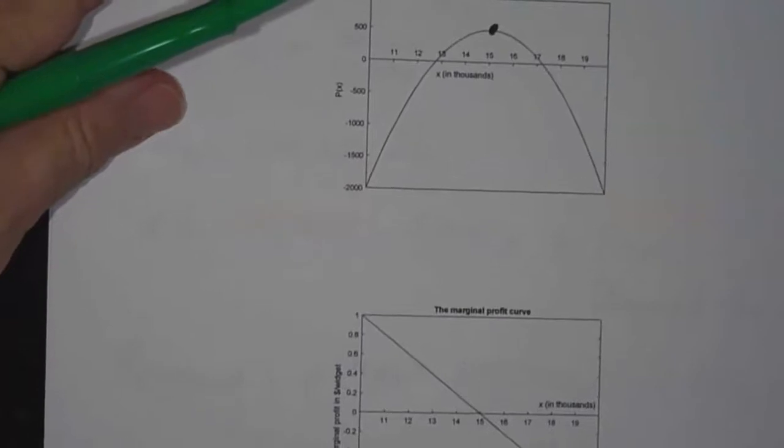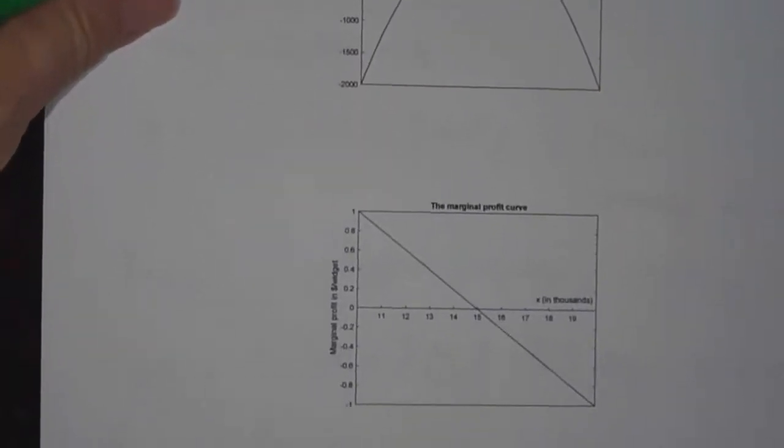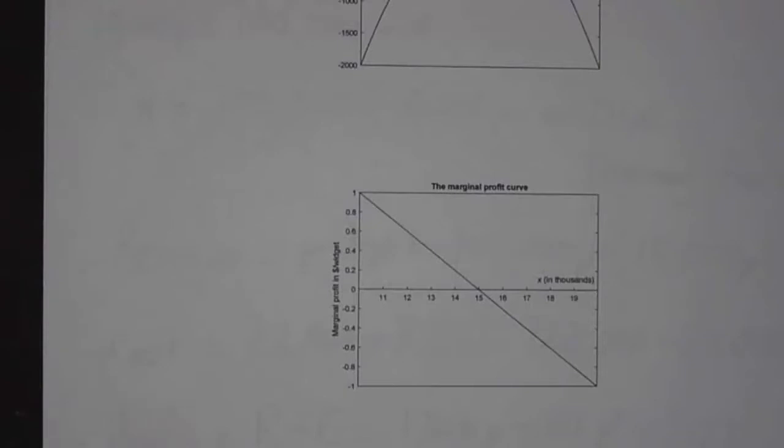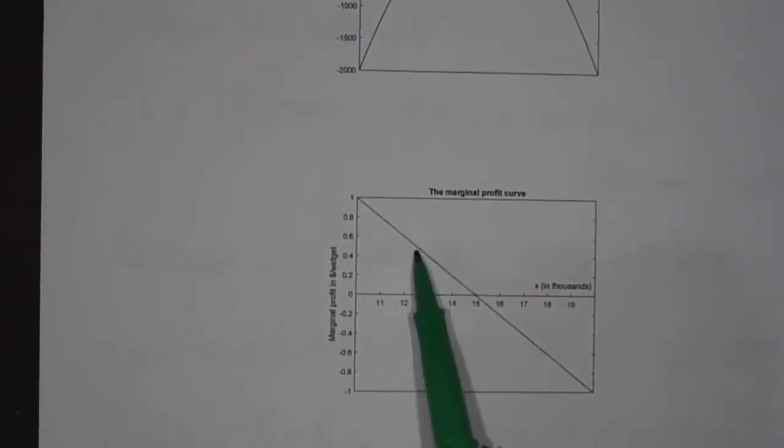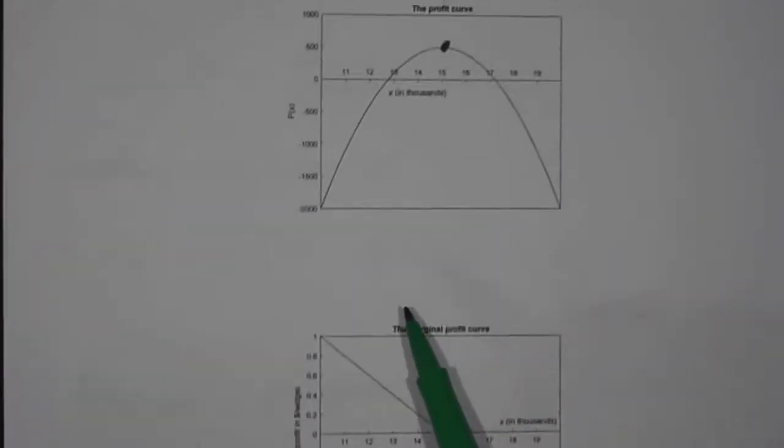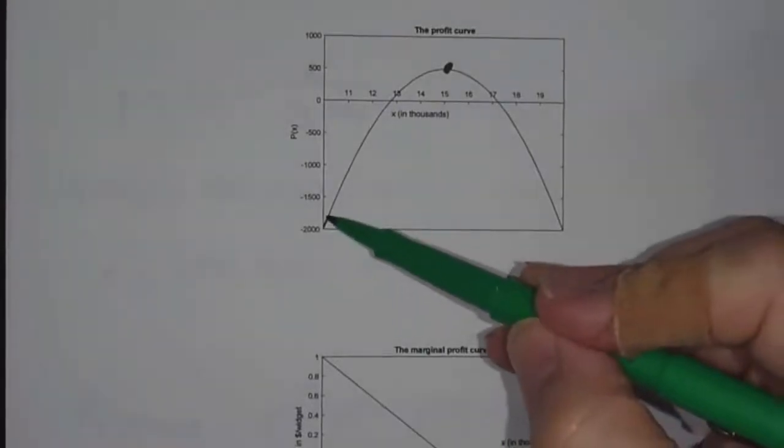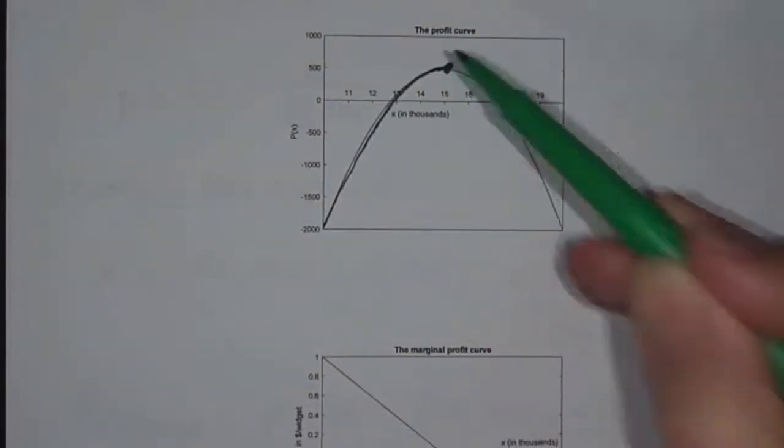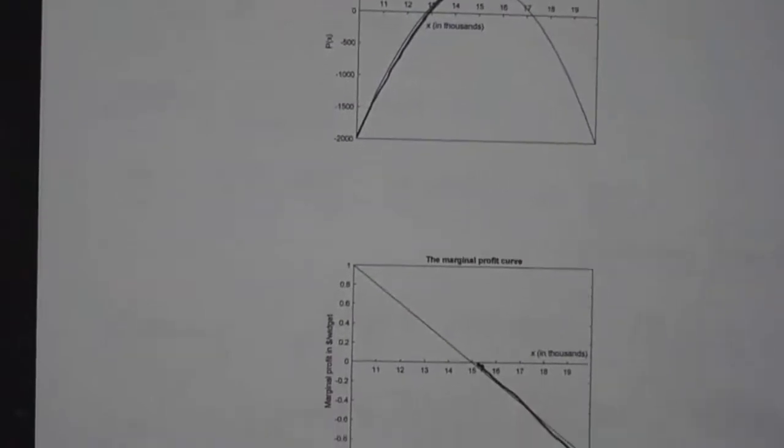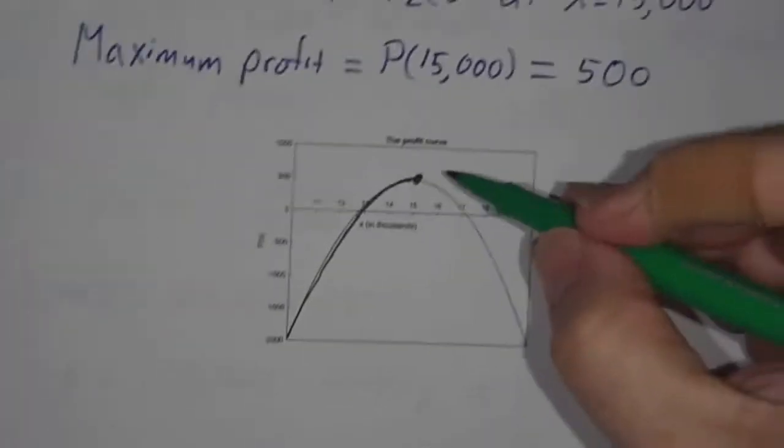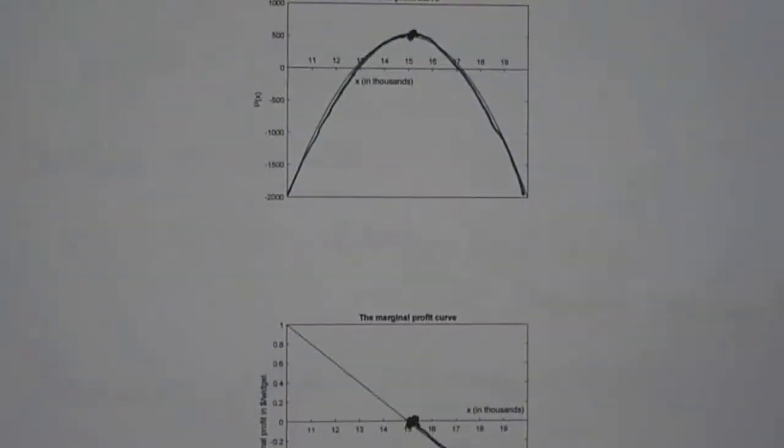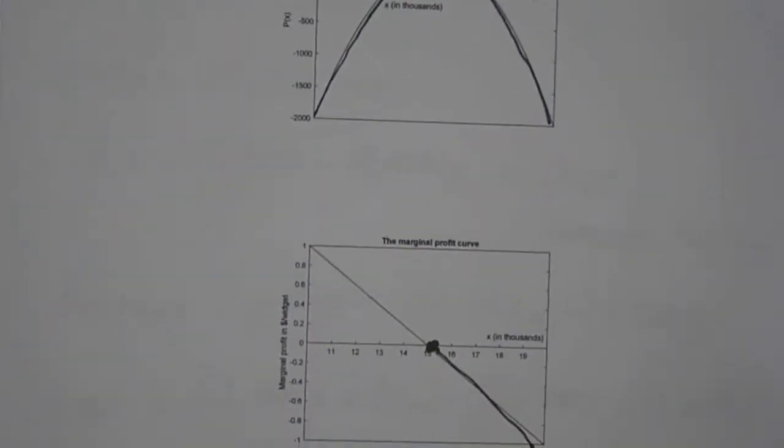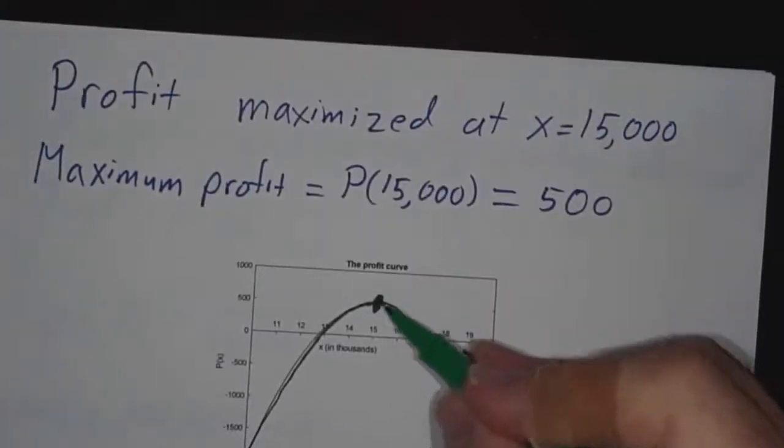If you look at the graph of the marginal profit, the marginal profit we saw was positive up to 15,000 and negative afterwards. So where the marginal profit was positive, the profit curve was heading up. Where the marginal profit was negative, the curve was heading down. Where the marginal profit is 0, that's where the curve reaches its peak.